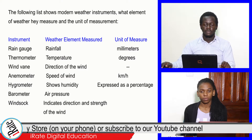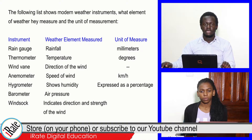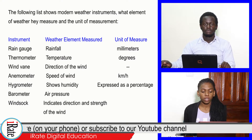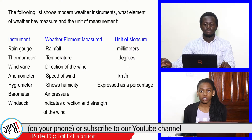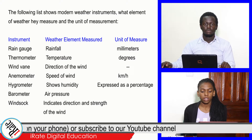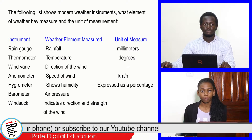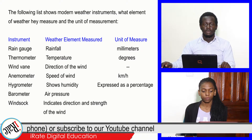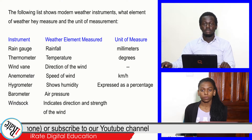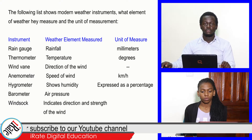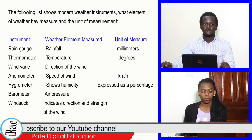Third, the wind vane measures the direction of the wind. Fourth, the anemometer measures the speed of wind and the unit of measurement is kilometers per hour. Fifth, the hygrometer measures humidity and the unit of measurement is expressed as a percentage.